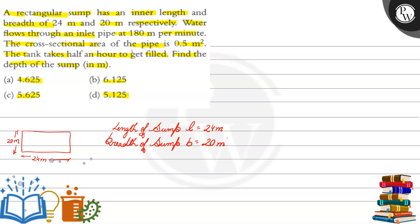और हमें बोला गया है कि एक pipe में से जो water जा रहा है, वो 180 meter per minute जा रहा है। और उस pipe का cross sectional area 0.5 meter square है। और यह जो हमें tank दे रखा है, यह half an hour लेता है fill होने के लिए। तो हमें बताना है कि इस tank की depth कितनी होगी।